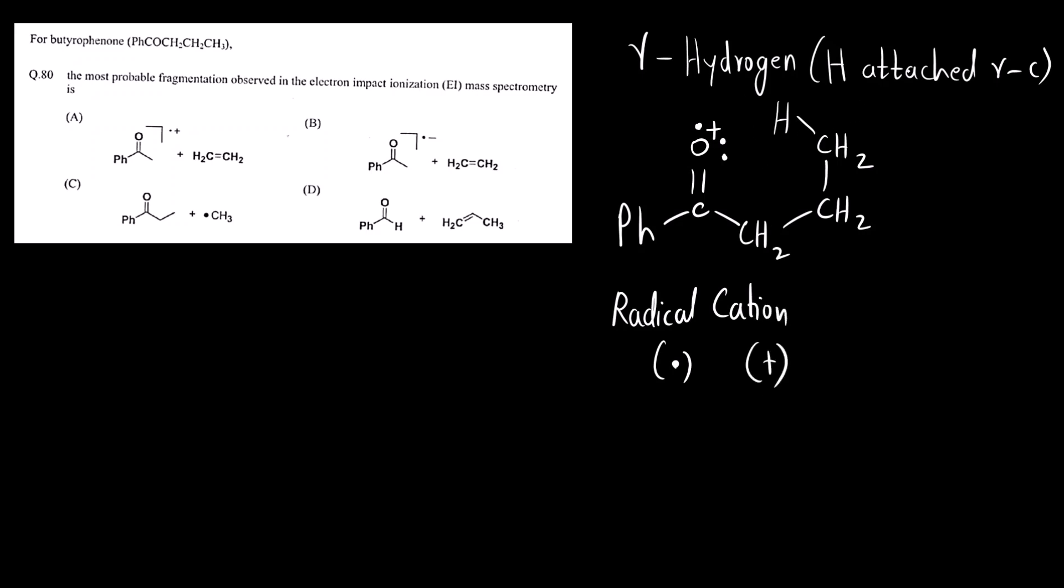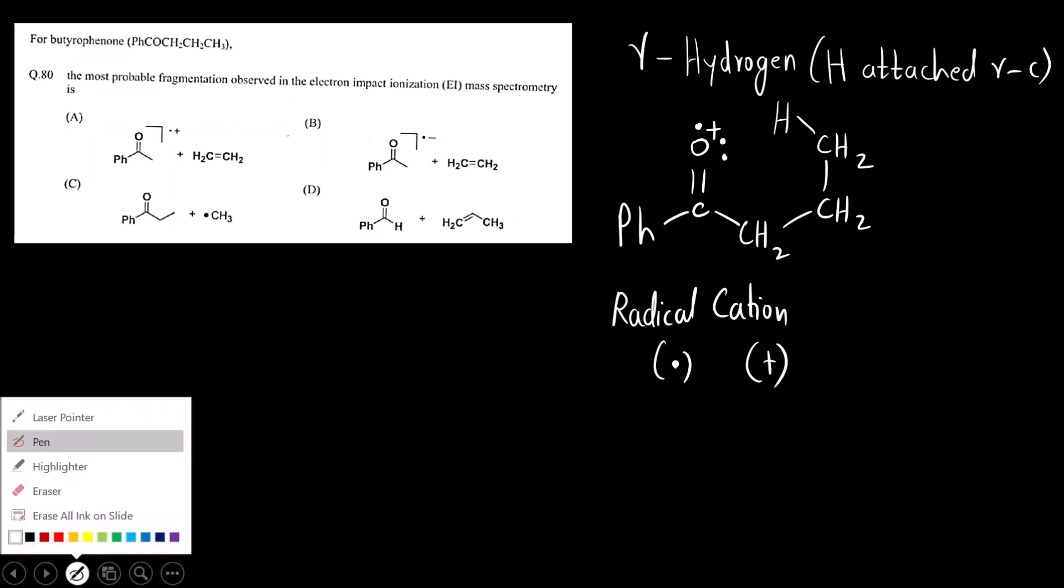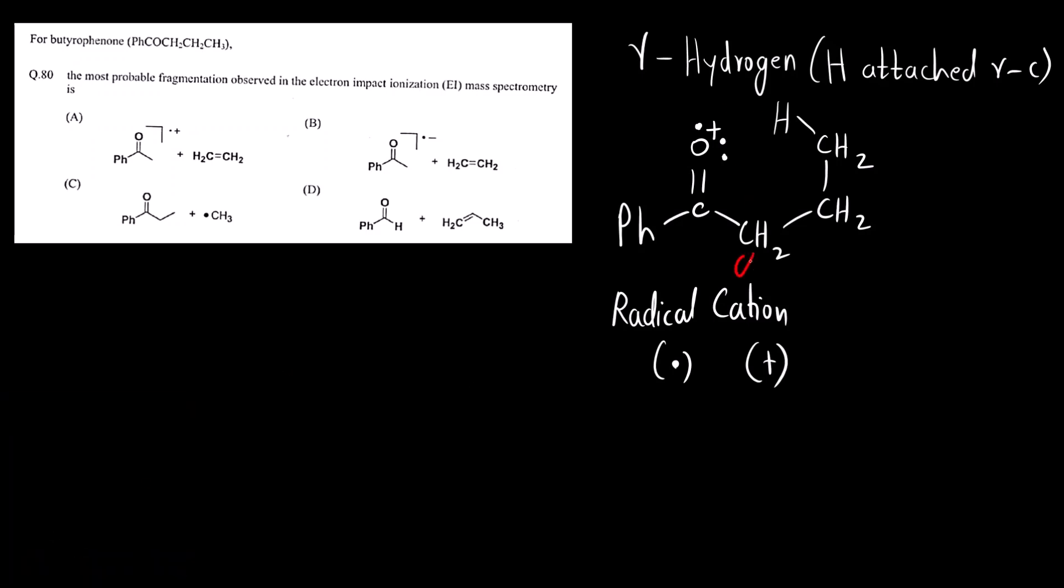So what will happen? Now gamma hydrogen will be abstracted. What is gamma hydrogen? This is a functional group carbonyl. The carbon next to it is alpha, next to that is beta, next to that is gamma, and if there is another carbon next to gamma will be delta.